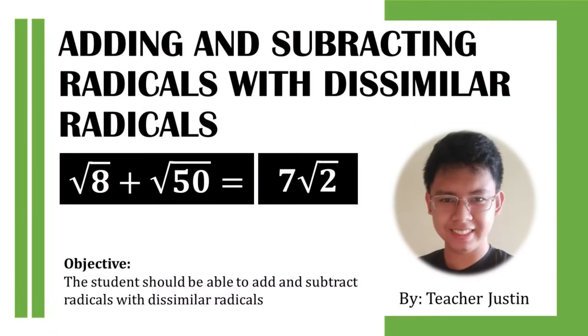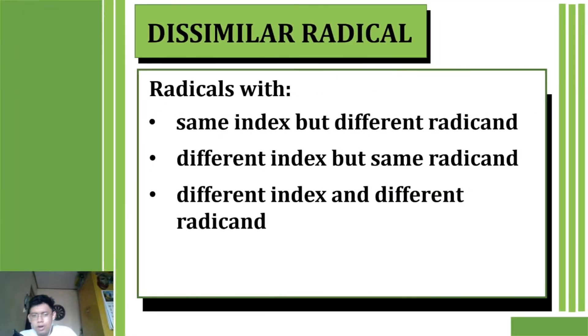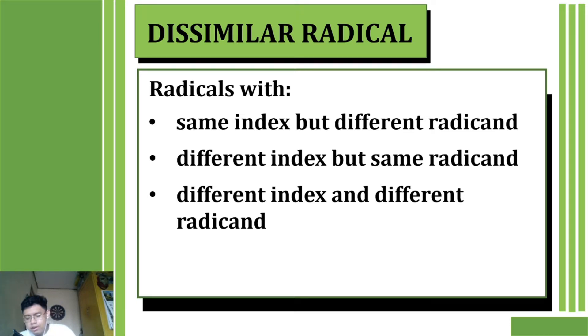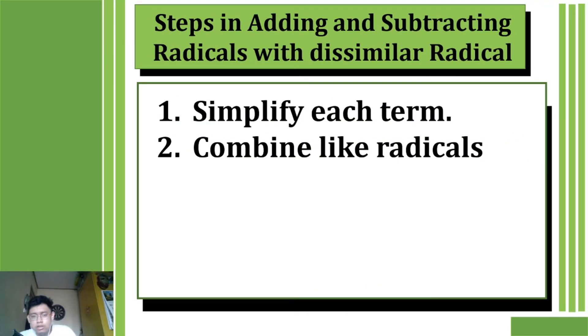Good day everyone, welcome to Math with Teacher Justin. On today's topic we're going to add and subtract dissimilar radicals. Dissimilar radicals are radicals with either the same index but different radicand, radicals with different index but same radicand, or radicals with different index and different radicand. The steps in adding and subtracting dissimilar radicals are: first, simplify each term; second, combine like radicals.